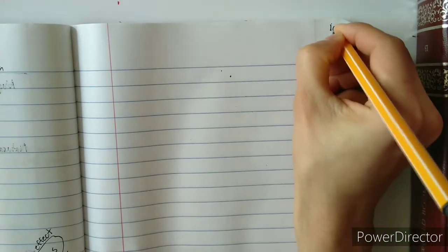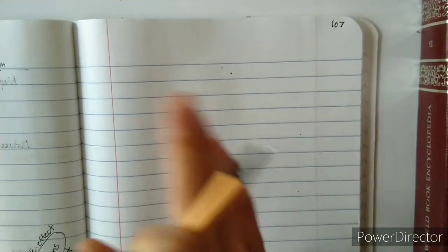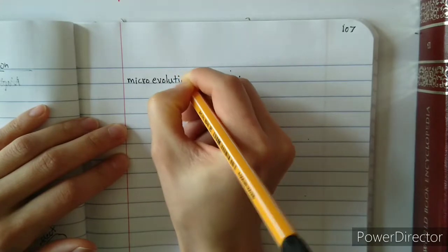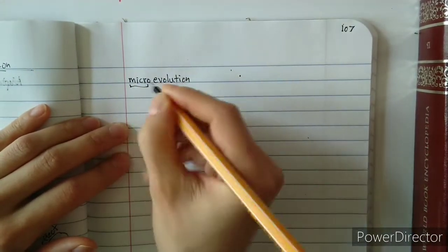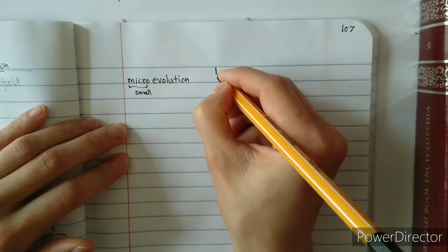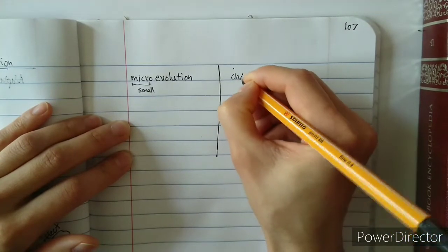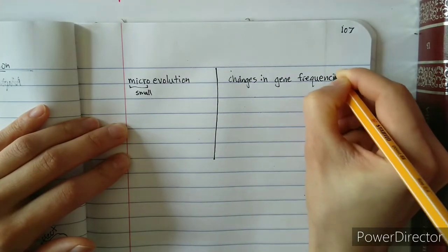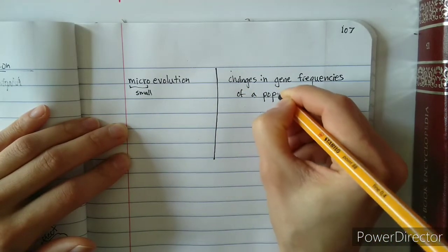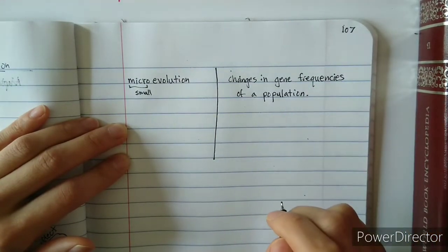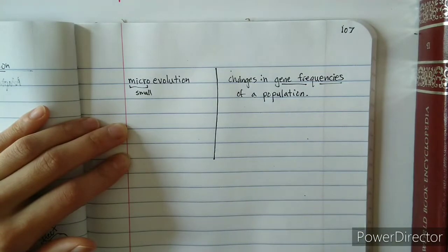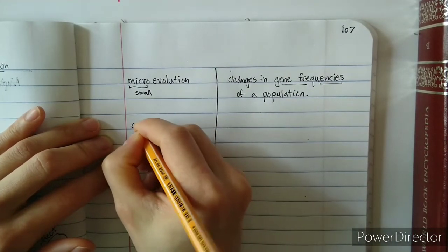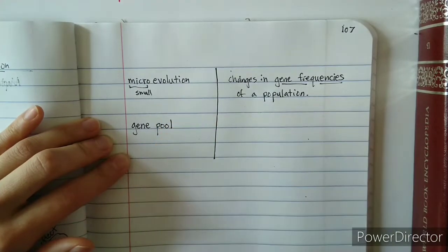Go to page 107, or if you have room you can keep adding onto page 106. The first vocabulary word is microevolution. Based on the name alone you can probably figure out that micro means something small. In these terms, microevolution is defined as changes in gene frequencies of a population. One last vocabulary word to clarify before the visual example is gene pool — let's write it down but see the visual example first before we put down a definition.